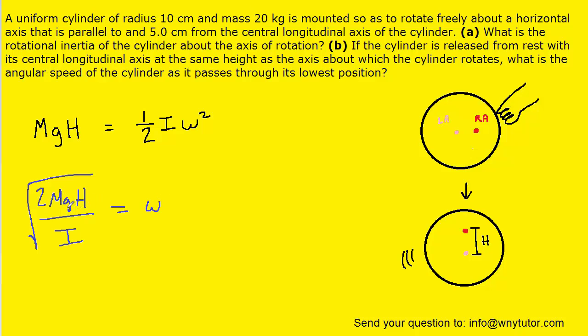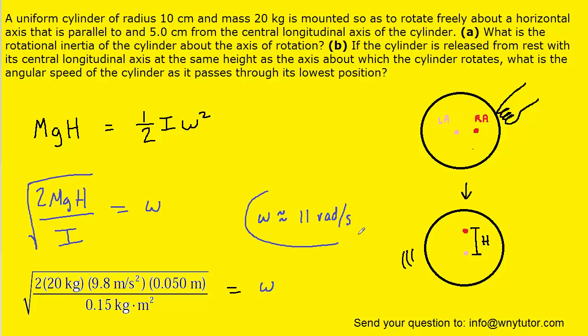We can simply plug in the known values. We have the mass, 9.8 for g. H again was that distance from the rotational axis to the longitudinal axis, which was that 5 centimeters. And then I we found in the previous question. So when you substitute in all the known values and compute that, you should get an angular speed of approximately 11 radians per second. So this would be the correct answer to part B.